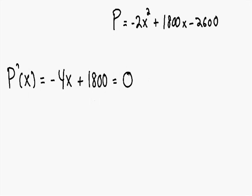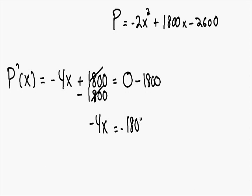Now we just solve for x. Subtract 1800 from both sides: the positive 1800 and negative 1800 cancel, leaving negative 4x equals negative 1800. Divide both sides by negative 4: the negative 4s cancel, leaving x equals negative 1800 divided by negative 4, which equals positive 450.